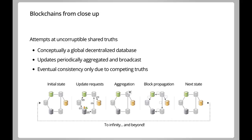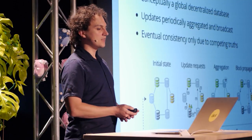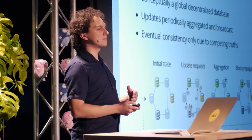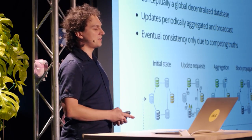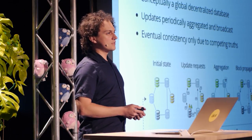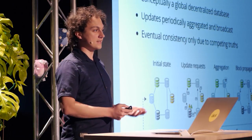More practically, blockchains are essentially distributed databases where anybody in the world can try to update the database. Initially the entire network agrees upon a state — the current state of the database. Then everybody tries to push in various update requests, modifying some state. After a while — be that seconds or minutes — somebody from the network stands out and says, 'I just aggregated all of these changes.' They propagate these changes in the form of a block, hence where blockchain comes from, and everybody accepts and updates their local view.